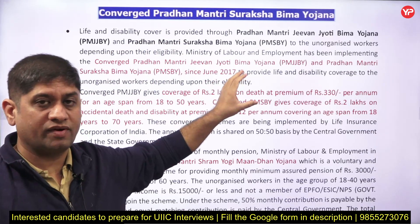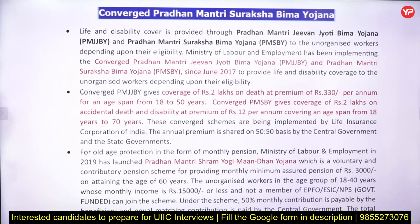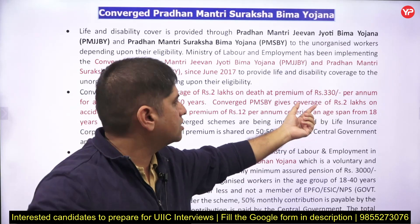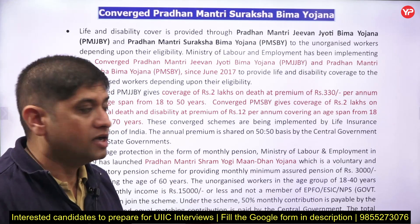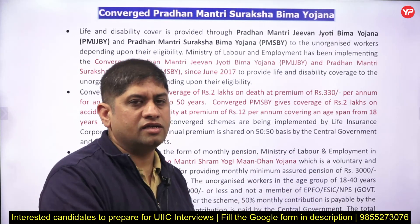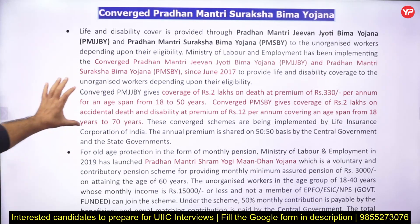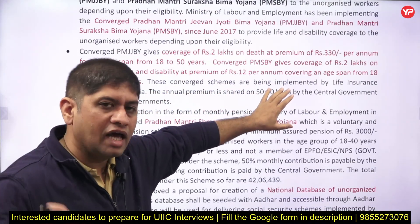These schemes provide coverage of 2 lakh rupees on death, with a premium of 330 rupees per annum for individuals aged 18 to 50 years. Premium is the amount you pay annually, monthly, or quarterly, and in case of death or disability, the specified sum is given to your family. You should understand the meaning of premium, and note that these converged schemes are implemented by LIC, not GIC, though questions can be asked as they are related terms.